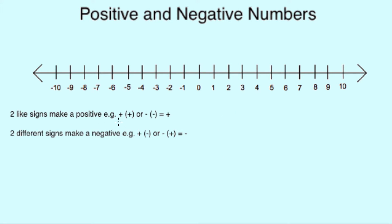So you'll see here there are two rules to remember: two like signs make positive, either plus and plus positive, or negative and a negative make positive. And two different signs make a negative, either plus and a minus, or a minus and a plus.